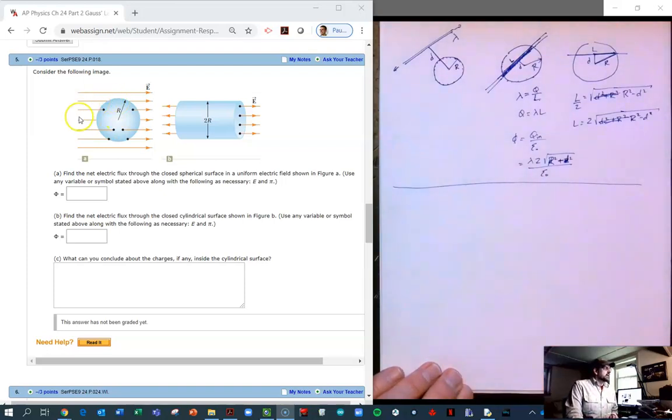we have a sphere here, and what we have penetrating that sphere is a uniform electric field E, and you can see here it goes from left to right, so every field line that enters the sphere also must exit the sphere.